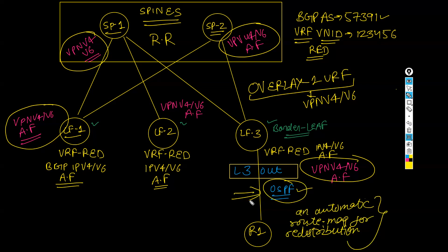This redistribution is called the interleak. When you deploy a routing protocol on the border leaf, redistribution is automatically done from that protocol into the BGP IPv4 address family. If you are running BGP instead of OSPF, then redistribution is not required, because the BGP process of the L3 out and the infra MPBGP are the same process.